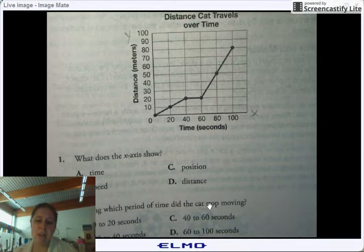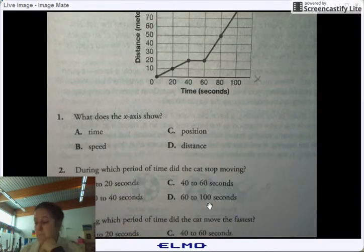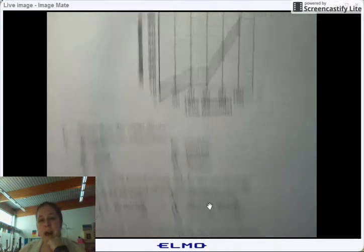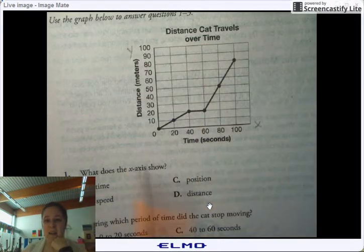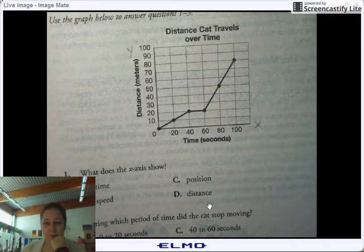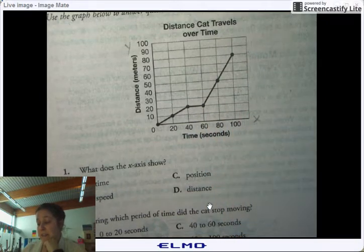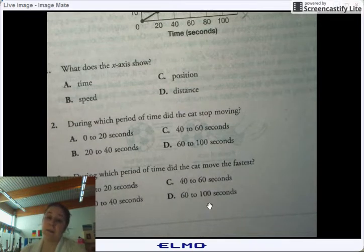During which period of time did a cat stop moving? 0 to 20, 20 to 40, 40 to 60, or 60 to 100? So stop moving, meaning flat line. Where do you see a flat line up here? I see the flat line. Take a moment. If you need to, trace your fingers. And you should have seen the flat line. And if that's the case, you should be able to answer number 2.